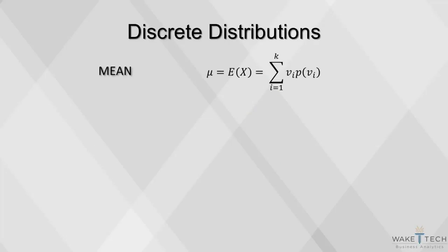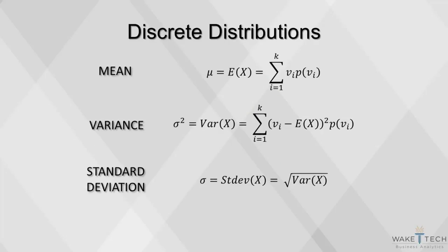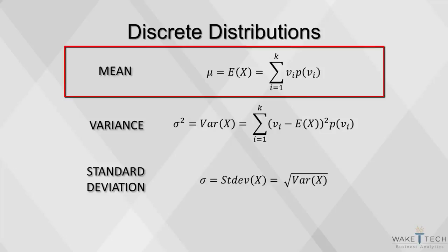These are formulas for working with discrete distributions. While we won't be computing these measures by hand, you do need to be aware of the formulas. The mean, also called the expected value, is calculated with this formula. The mean is a weighted sum of all possible values, weighted by their probabilities. Mean is denoted by the Greek letter mu.